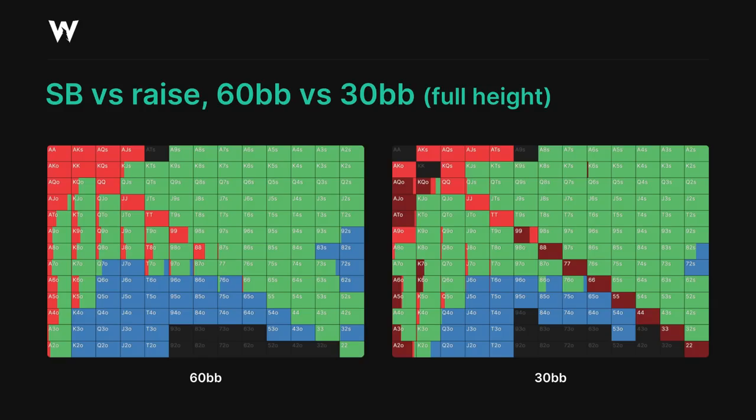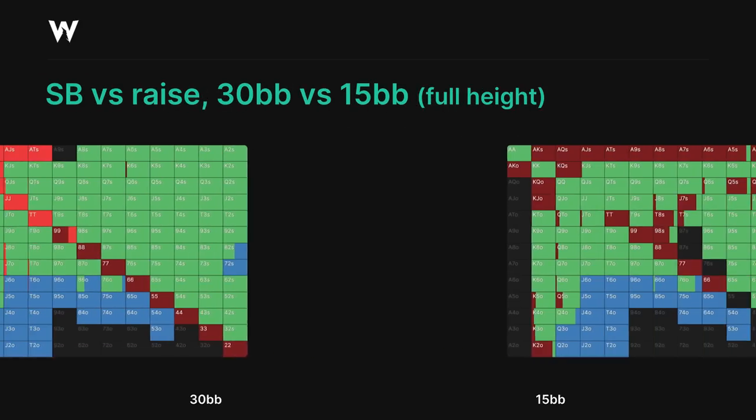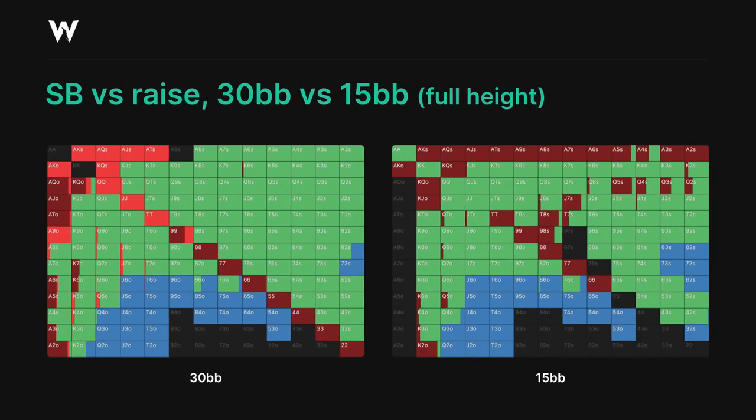We're mostly limp jamming, limp calling, or limp folding here. Once we get below the final pivot point of 25 big blinds, we can see from this 15 big blind example that we have no room to limp raise small anymore.